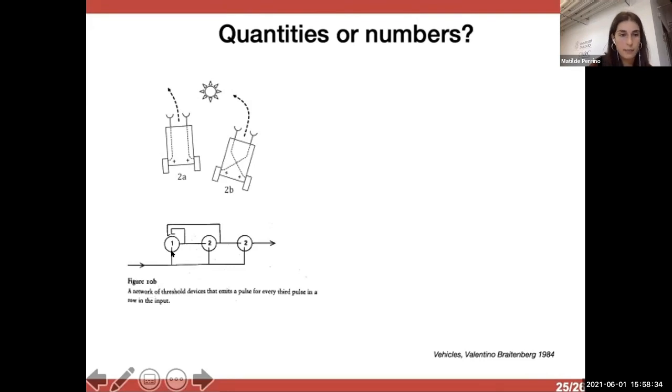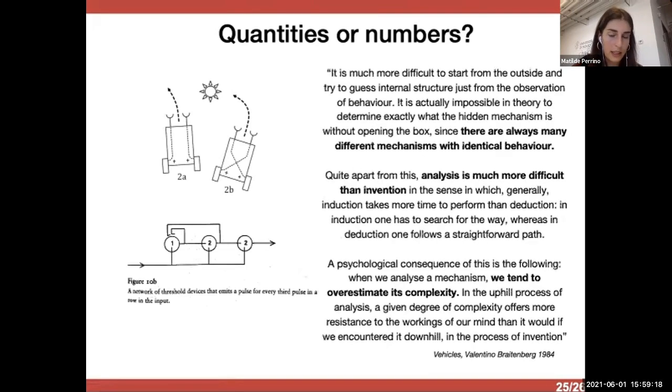And with respect to numbers, it shows how introducing some threshold devices into these simple networks basically can enable the device to count in the sense that a network like this emits a pulse for every third pulse in a row in the input. So, it would, for example, move only after seeing three stimuli. And we would say in this case that maybe this device is counting, but what is there is just a threshold that enables the vehicle to operate in this way.